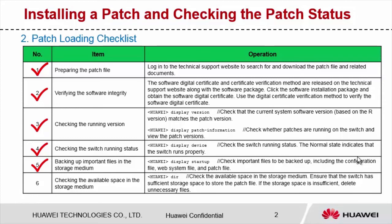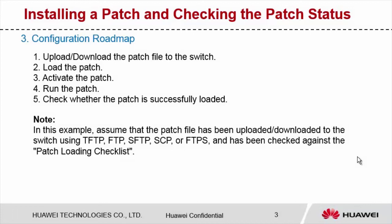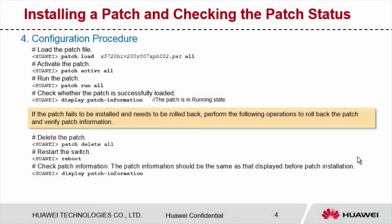Now let's see the configuration roadmap for patch installation: upload the patch file to the device, load the patch, activate the patch, run the patch, then check whether the patch is successfully loaded. In this example, assume that the patch file has been uploaded to the device and has been checked against the patch loading checklist. The configuration procedure is: load the patch file, activate the patch, run the patch, and check whether the patch is in running state.